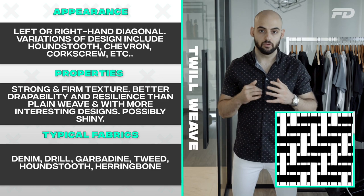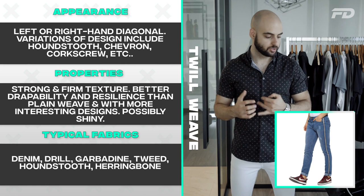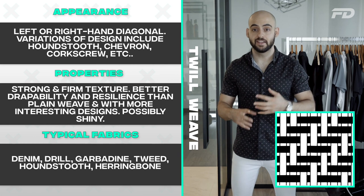By varying warp and weft yarn colors, you can create extremely interesting designs. Common fabrics using the twill weave include denim, drill, gabardine, tweed, houndstooth, and herringbone.